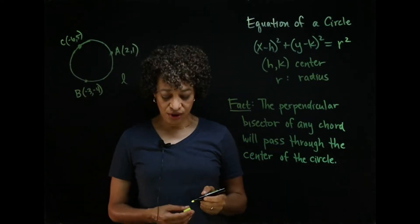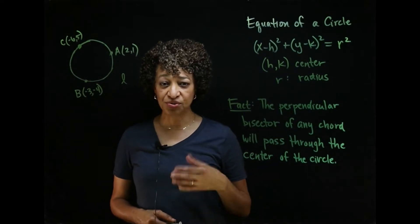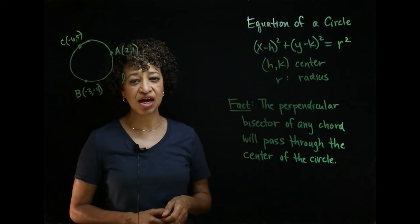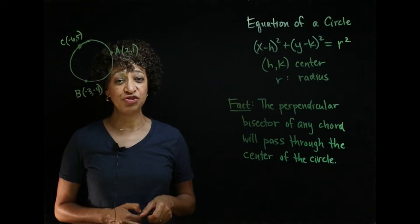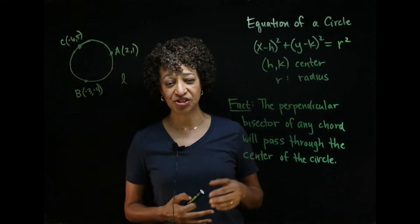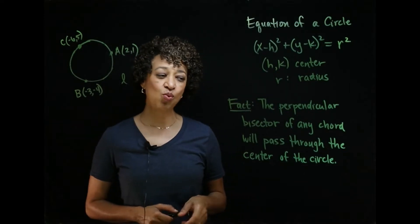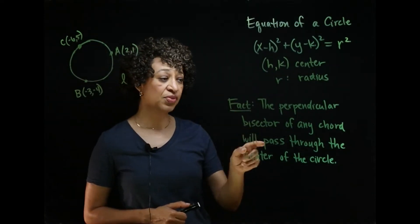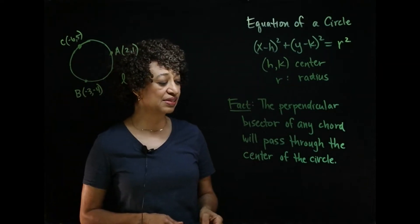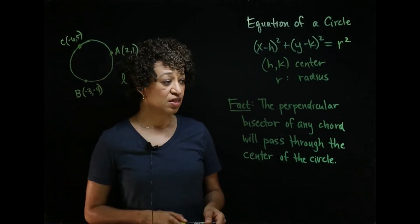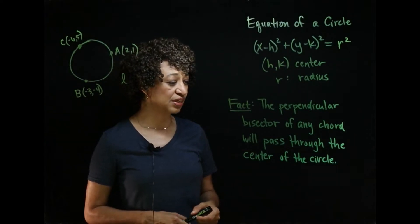Now, in order to do this problem we're going to use a theorem from geometry. To be a good student in geometry you need to know all of your theorems — if you don't know your theorems or postulates, it's very difficult to be successful. Here's the one we're going to use: the perpendicular bisector of any chord will pass through the center of the circle.